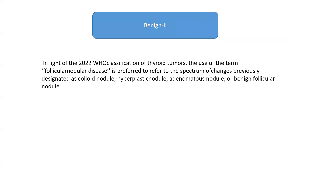In context of category two, which is benign, the more detailed terminology used is follicular nodular disease. This refers to all the spectrum of changes previously designated as colloid nodule, hyperplastic nodule, adenomatous nodule, or benign follicular nodule. All of these are now termed follicular nodular disease in this classification, in line with the WHO classification of thyroid tumors released in 2020.